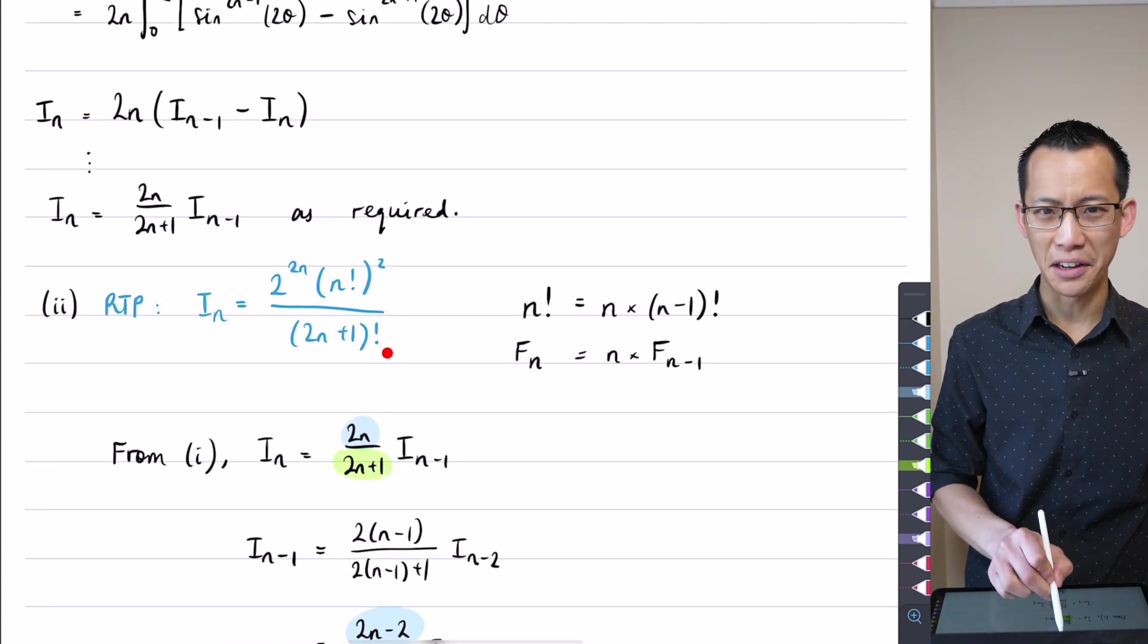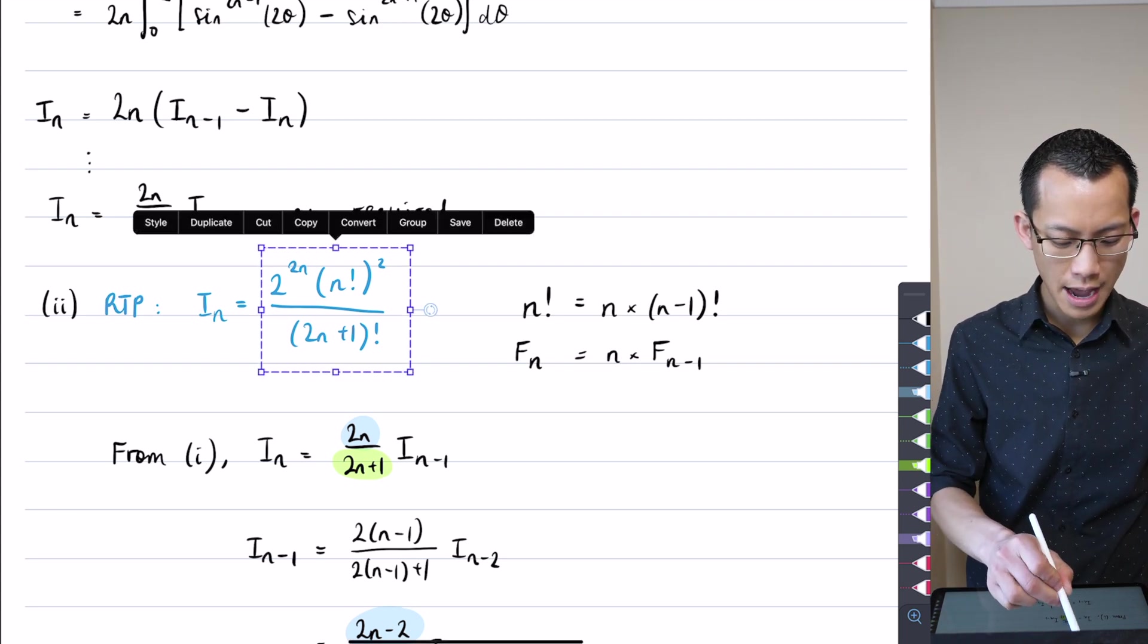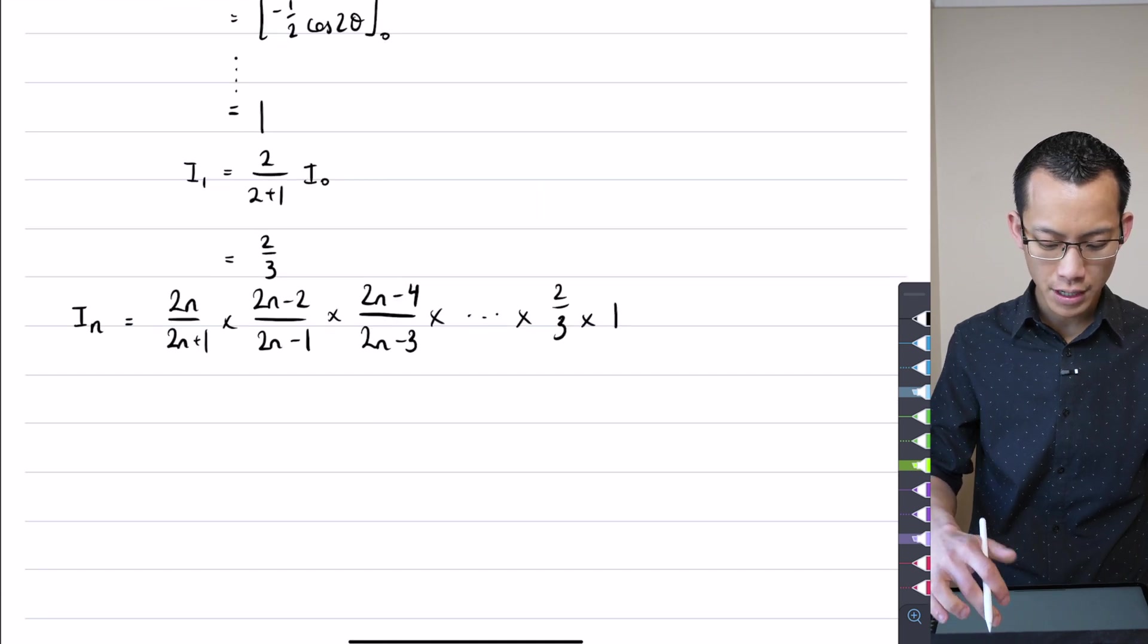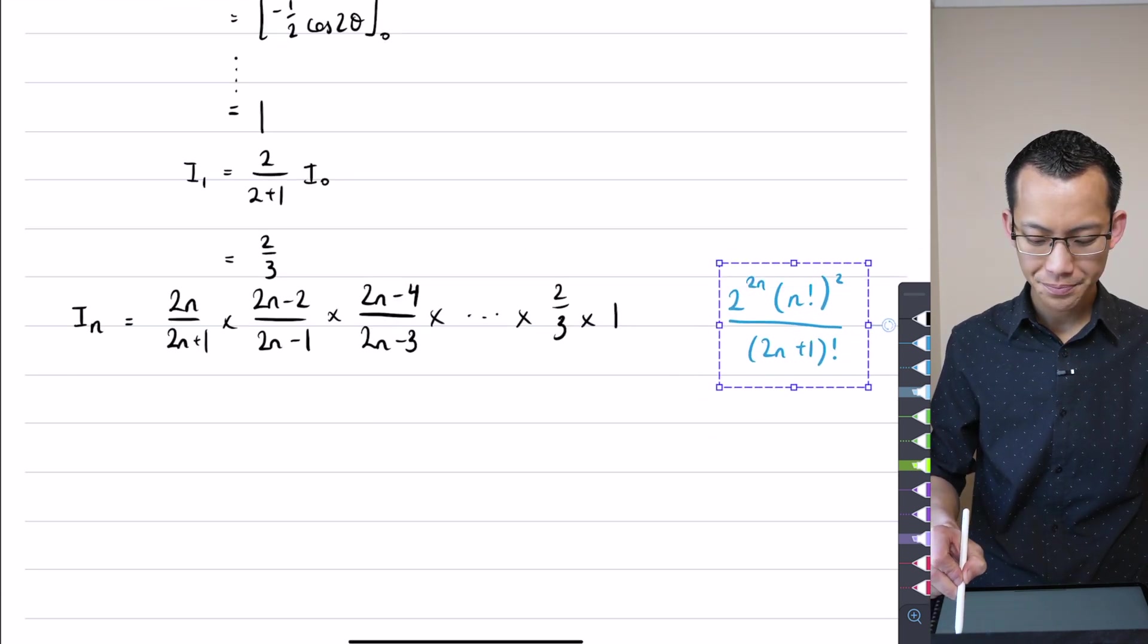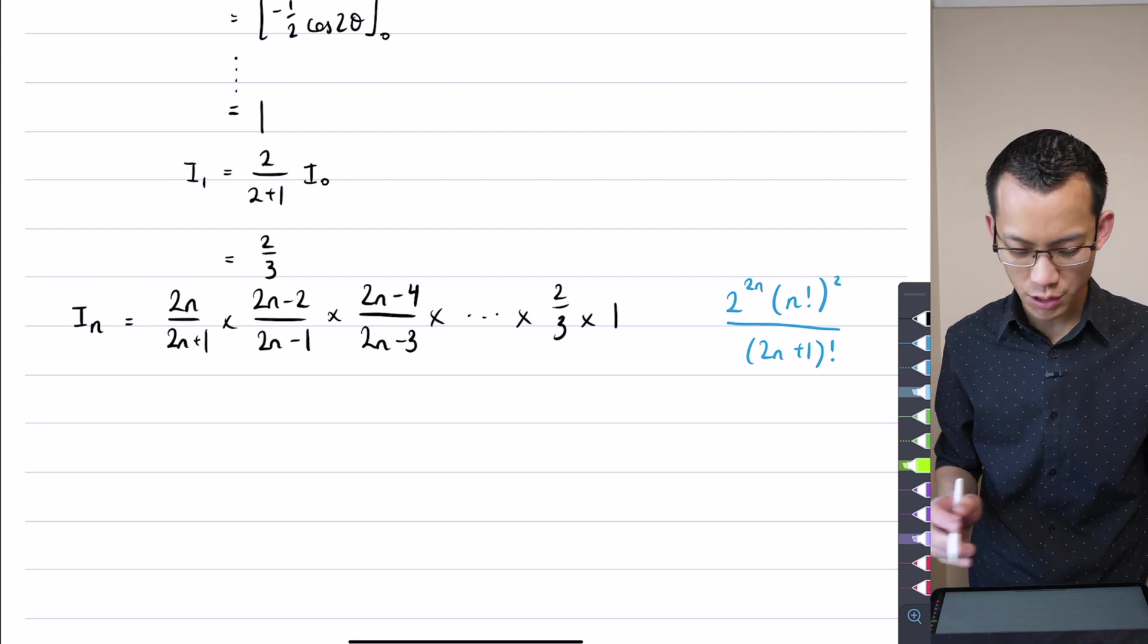This thing here, the one that was like, ugh, gross. How is this similar or different to this result right here? Well, for me, the easiest thing is actually to have a look at those denominators.